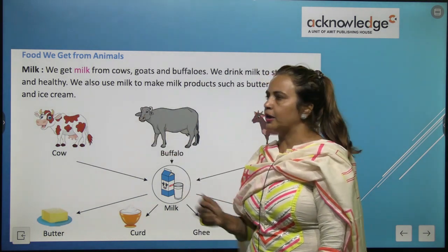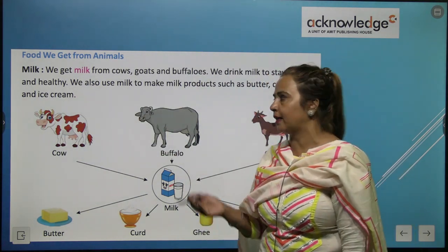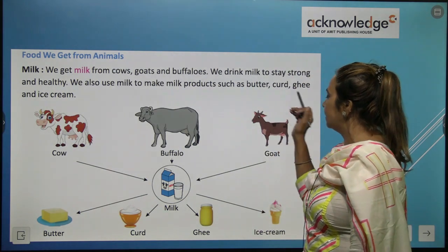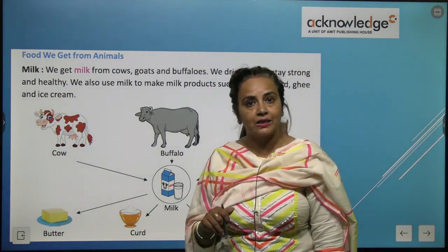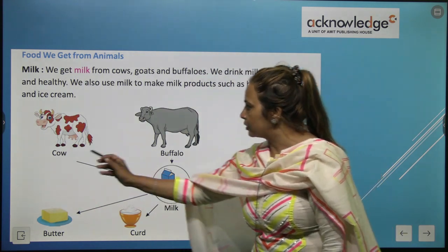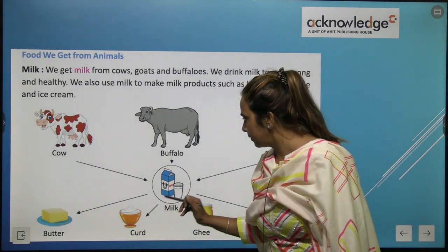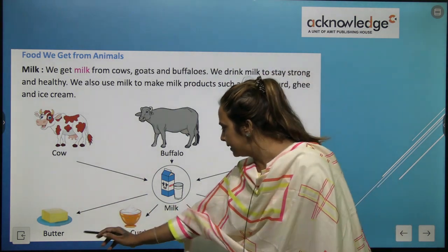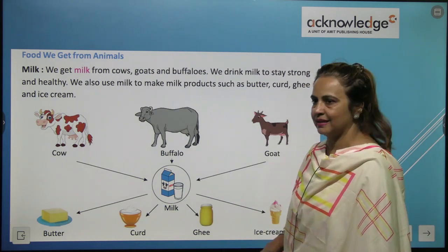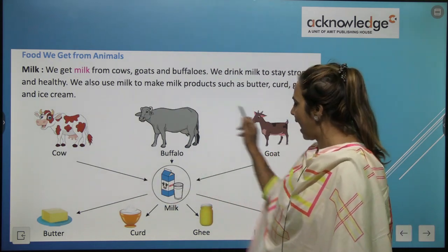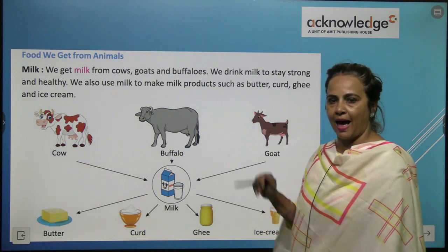We also use milk to make milk products such as butter, ghee, and ice cream. Cow, buffalo, and goat give us milk. Milk products we get from animals include butter, curd, ghee, ice cream, and milk.